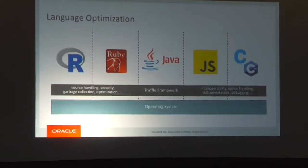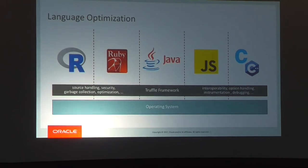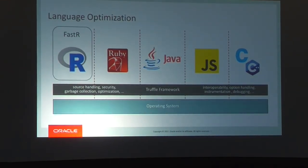This is where the Truffle framework comes in. It's a framework developed by Oracle Labs — like an operating system for programming languages. It's based on a JVM, which already gives you garbage collection and security services. On top of that, the Truffle framework does more: it handles source locations, interoperability between languages, debugging services, and optimizations. This is what we leverage with FastR, which is an open source implementation based on Truffle, which is also open source.